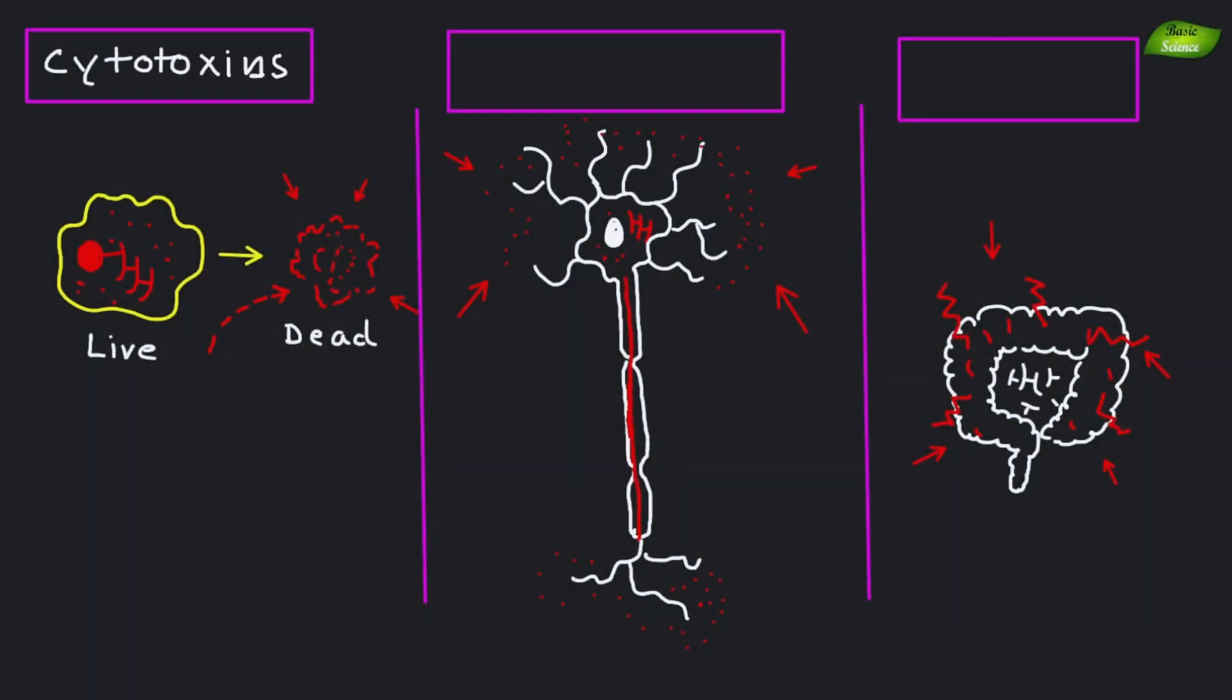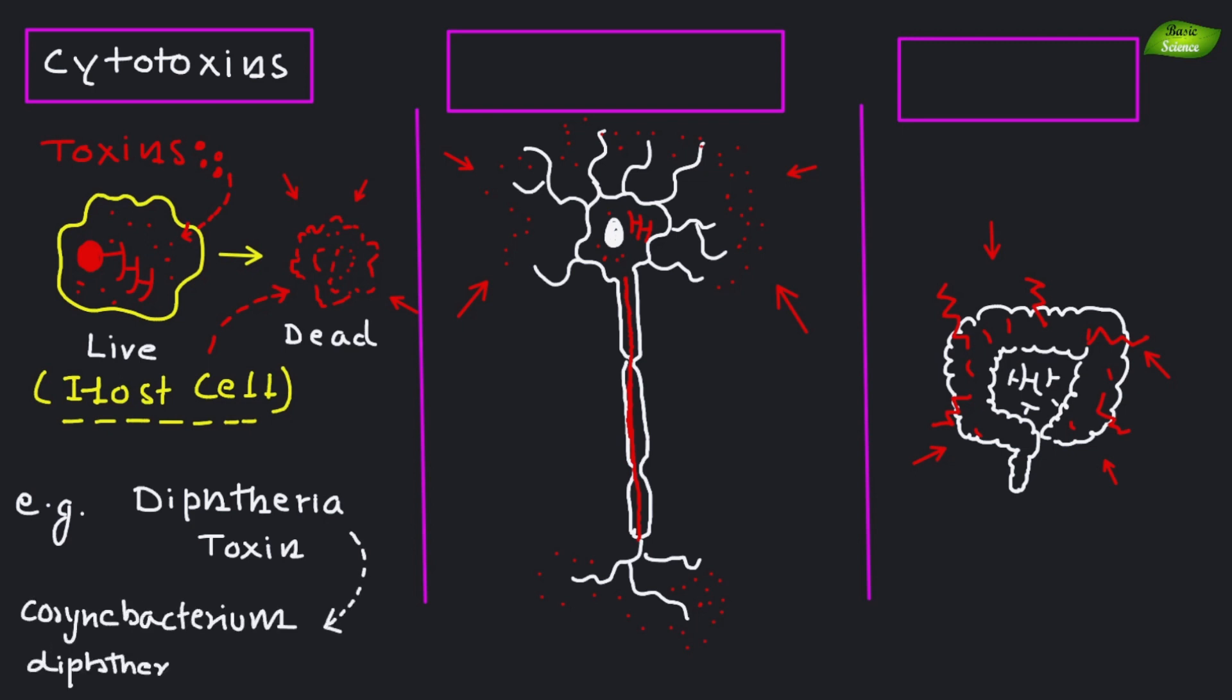Let's talk about cytotoxins. These toxins damage host cells directly, leading to cell lysis and death. An example is the diphtheria toxin produced by Corynebacterium diphtheriae.